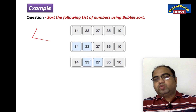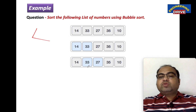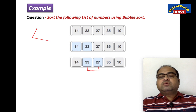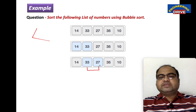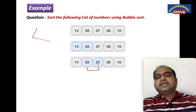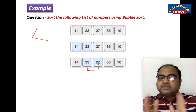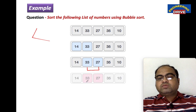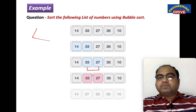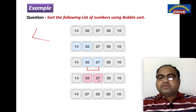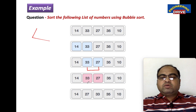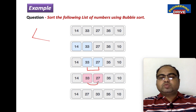Next step — this is the unique thing. The second number is now compared with the third number. Again, less-than comparison: 33 is less than 27? The condition is false. Whenever the condition is false, we need to swap them. So 33 comes to 27's position and 27 comes to 33's position. We have successfully swapped these two numbers.